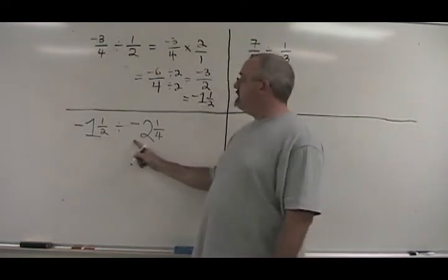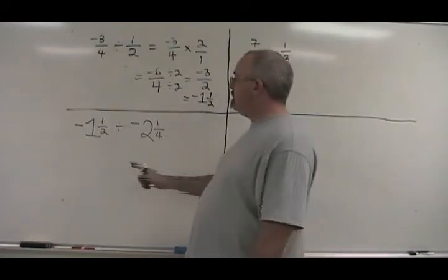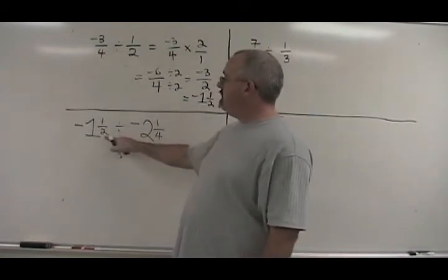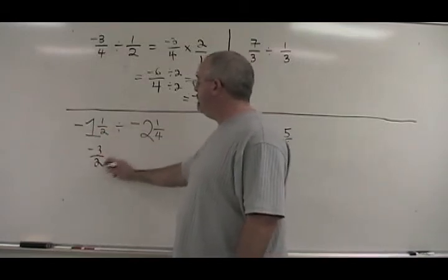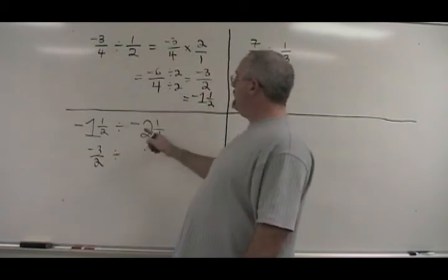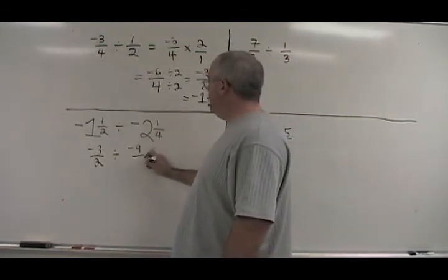Here we're dividing fractions but we have mixed numbers. We convert the mixed numbers into improper fractions first. 1 times 2 is 2 plus 1 is 3. Negative 3 over 2. 2 times 4 is 8 plus 1 is 9. Negative 9 over 4.